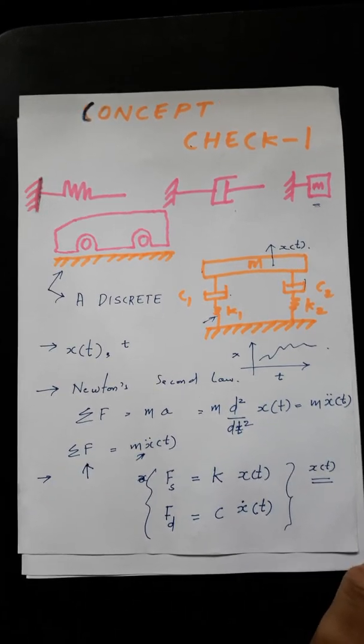So see, all these springs and dampers, they're actually helping us in a way to put all, or to relate the response x of t to the forces acting in the system. So we can look at springs and dampers as certain elements which will relate the derivatives of the response and the response to the forces acting on the system.